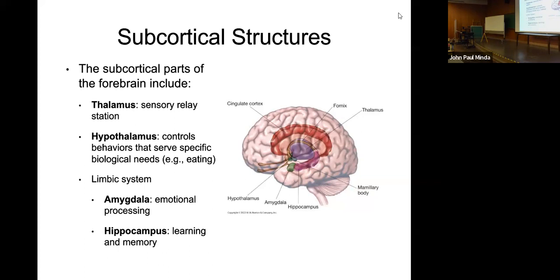Some subcortical structures are important — specifically those listed in bold. Ignore structures like the mammillary body, which we don't cover. Focus on the thalamus, hypothalamus, amygdala, and hippocampus. The hippocampus emphasizes memory consolidation, the amygdala handles emotional processing, the thalamus manages sensory integration, and the hypothalamus mediates primary functional behaviors.